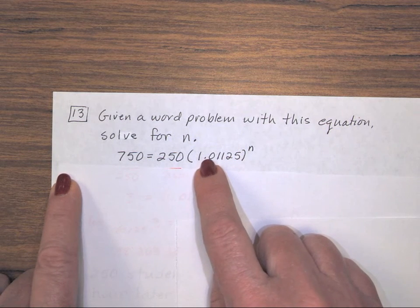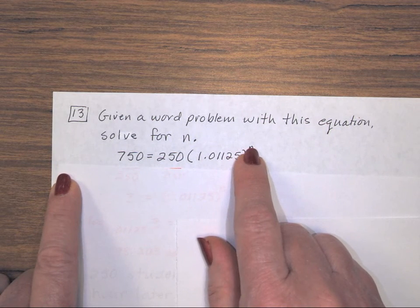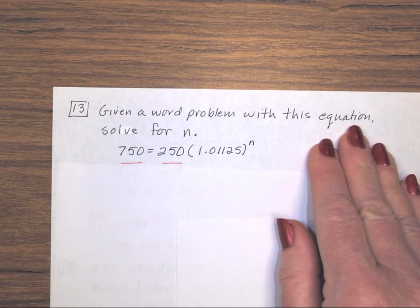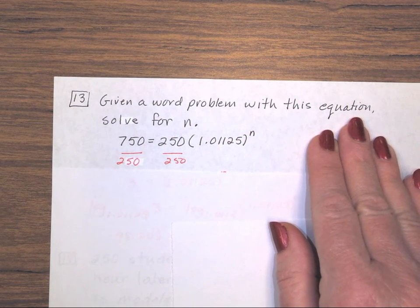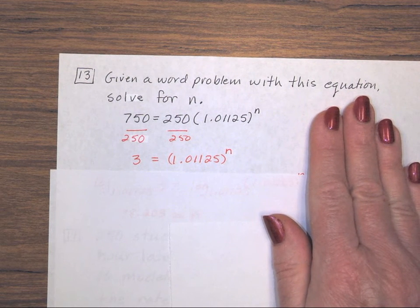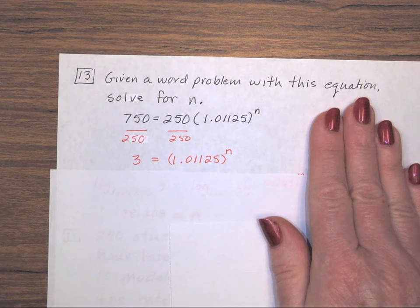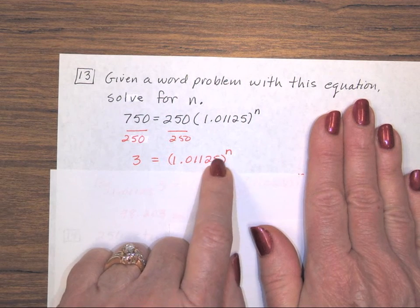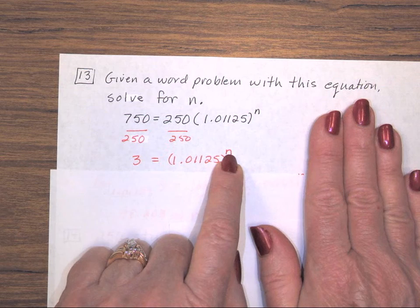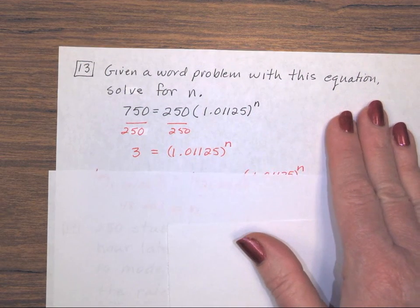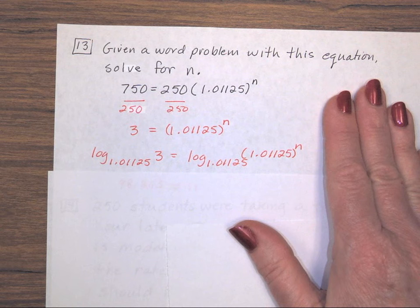First thing I want to do is get the base to this unknown power by itself. Right now, it's being multiplied by 250, so I divide by 250 on both sides. When I do, I have 3 equals 1.01125 to the nth power. Well, how do I get rid of this base if I want to get n by itself? We'll use the log of that same base. Just because it's a big, long decimal doesn't make it any different than any other problem you've ever worked.